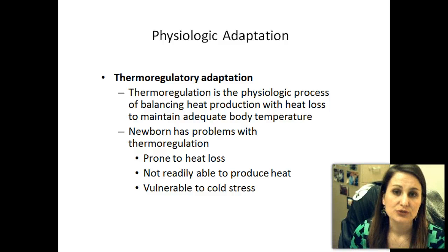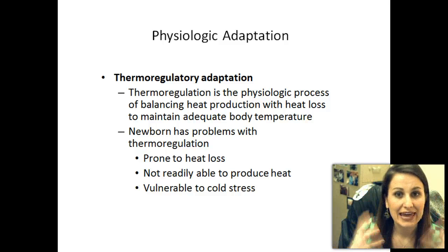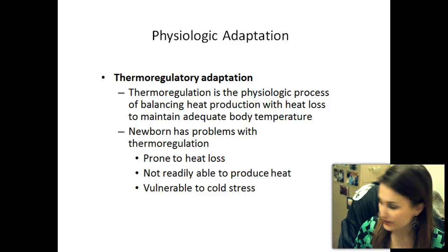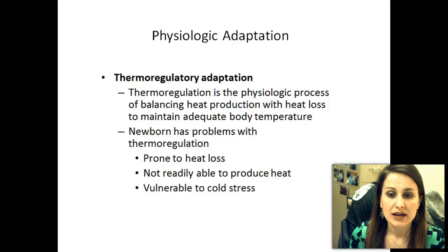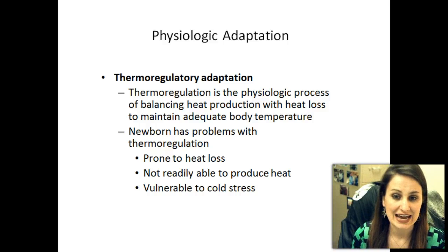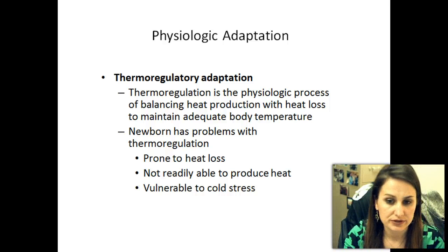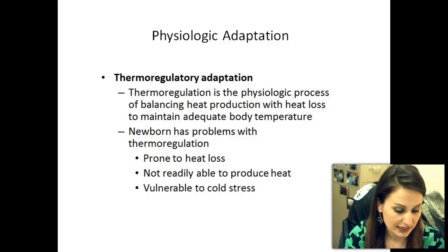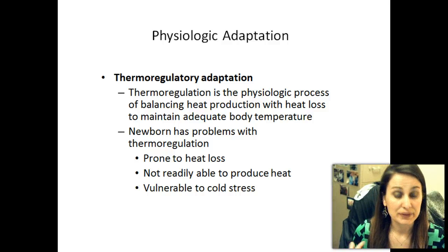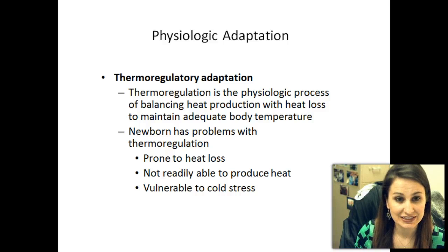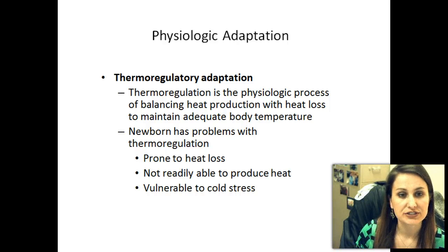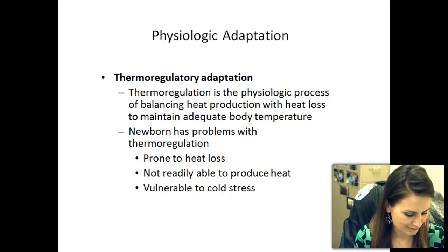Thermoregulation is huge with infants — this is why we swaddle them and why we keep a cap on them all the time. It's the physiological process of balancing heat production with heat loss and maintaining adequate body temperature. A newborn has problems with thermoregulation. They're prone to heat loss. They don't have the muscles and the adipose tissue like we do to help produce heat. They have more skin surface ratio than adipose fat or muscle, so they can lose their heat easier through evaporation, conduction, convection, and radiation.